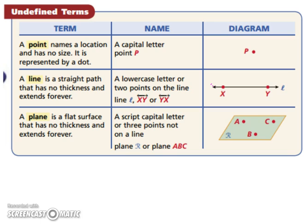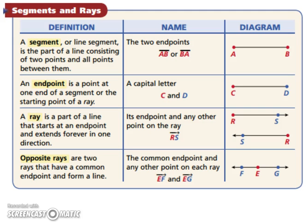Let's look at some more vocabulary. A segment, sometimes called a line segment, is the part of a line consisting of two points and all points between them. So you will label it with two endpoints, and once again those are capital letters. And you can go either way. Segment AB or BA. Notice there's no arrows over the top, it's just a singular segment.